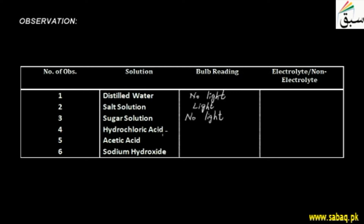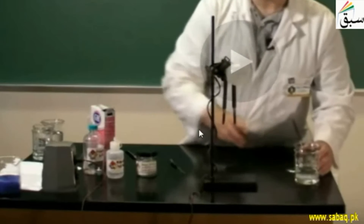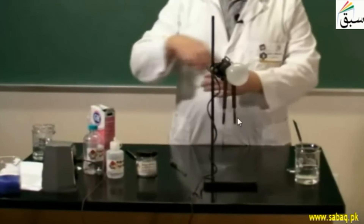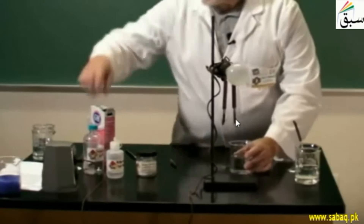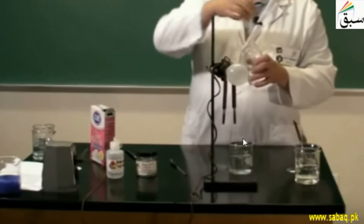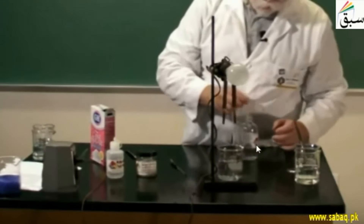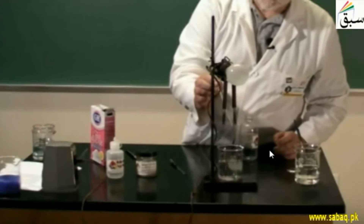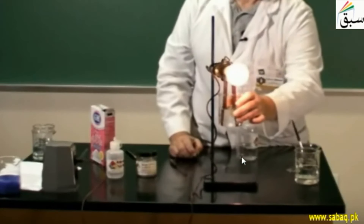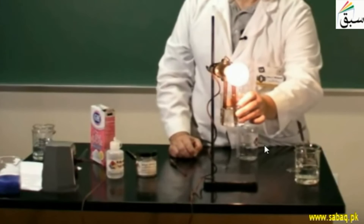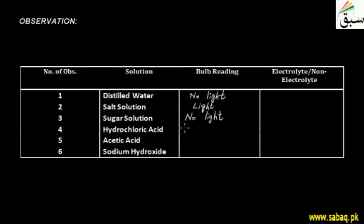Next, hydrochloric acid is a strong acid. We have a beaker with distilled water. Distilled water is not conducting on its own, but as we add a few drops of hydrochloric acid, this bulb is giving bright light. So we will note the observation: bright light.